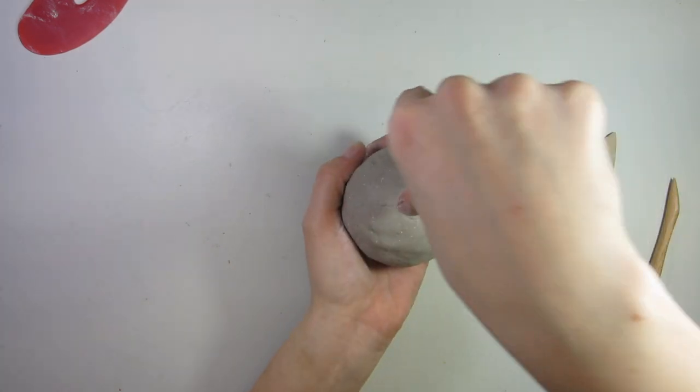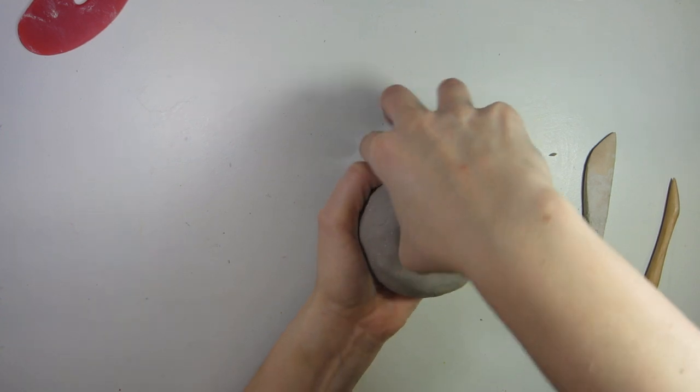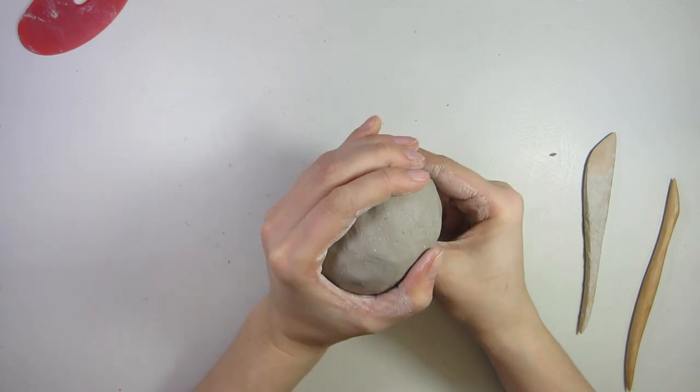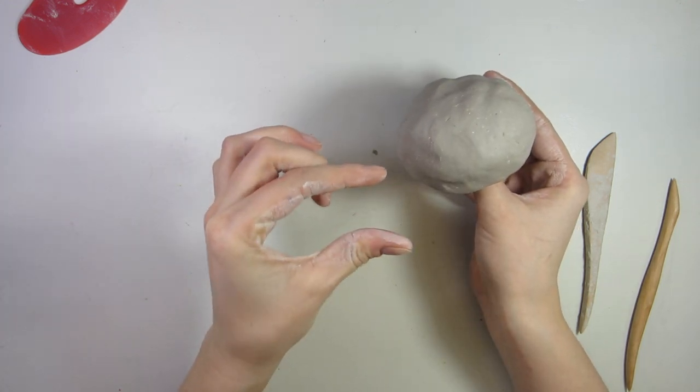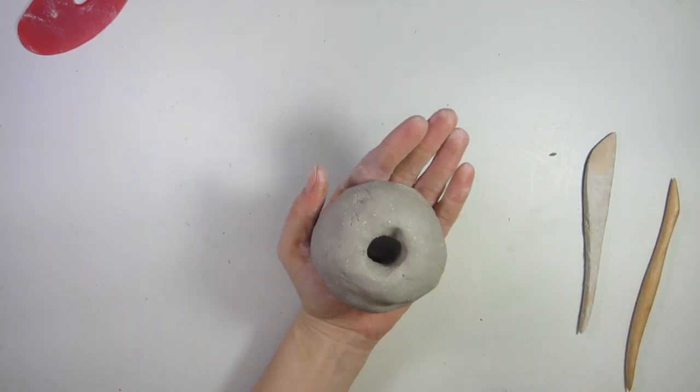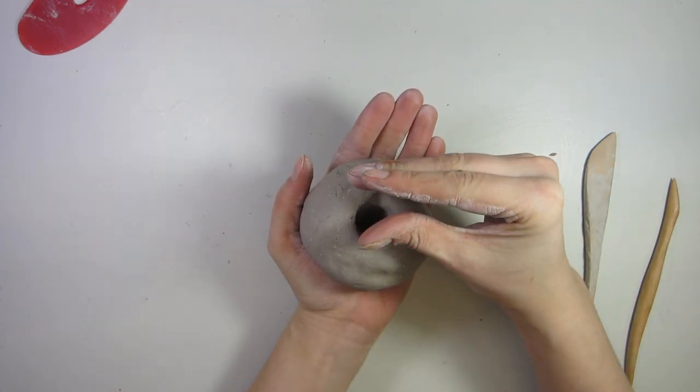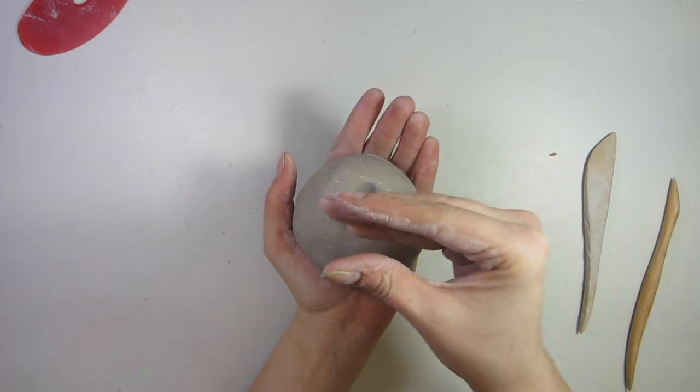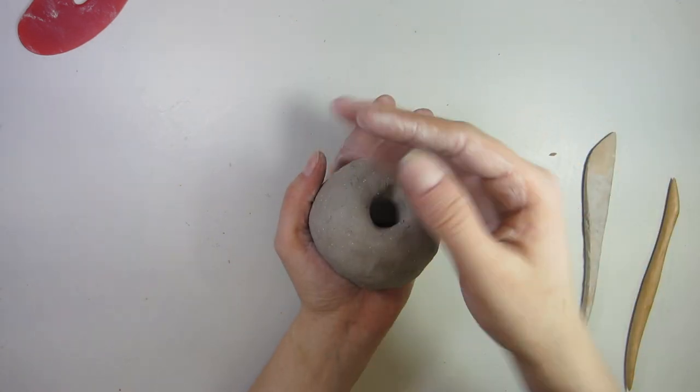So we're going to take our thumb and we're going to press it in down through the center of our ball of clay. Now, we need to not poke through. We need to kind of guess and make sure that we have about a half inch to an inch of clay at the bottom. And now it should look like a ball with a hole. Take your pinching alligator fingers. And remember, we can't pinch any thinner than half an inch because it shrinks. And we don't want to make it too thin because it will also crack or crumble eventually.